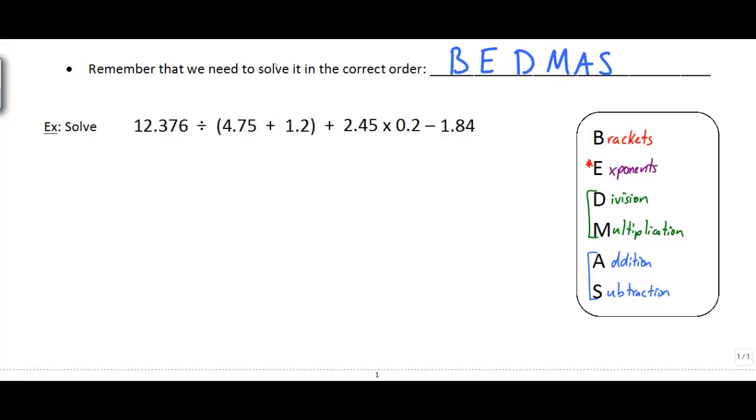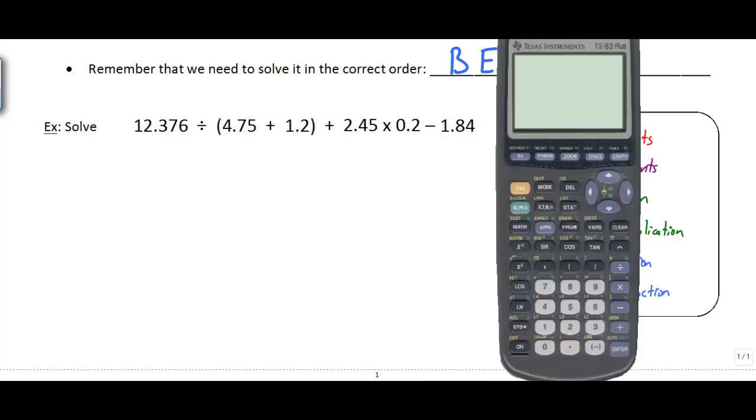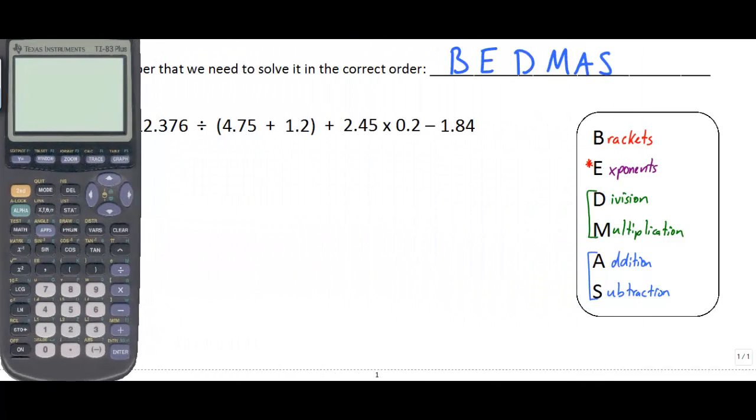If we have a question like the following here, this is a pretty ugly set of operations that we need to do: 12.376 divided by blah blah blah and on and on. The way we're going to do this is to just actually go through step by step. For any of these questions that have multiple operation steps, you're actually allowed to use a calculator, and you'll be allowed to use one on the quiz and so on.